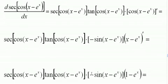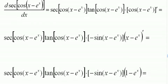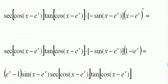It would look better if we distributed the negative here and got e to the x minus 1, brought it out front. Notice I distribute that and bring it out front, bring the sign out front also, which is no longer negative. And times the secant of cosine x minus e to the x, times the tangent of cosine x minus e to the x.